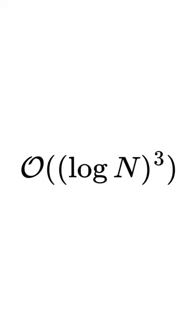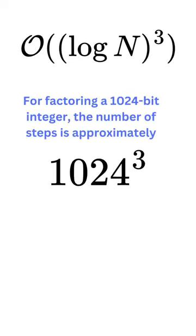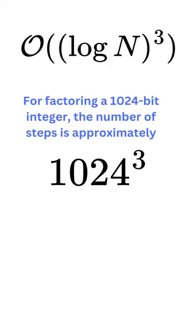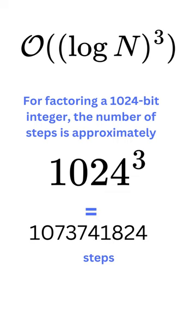The time complexity of the algorithm is O(log n)^3, which means that for factoring a 1024 bit integer, the number of steps is approximately 1024^3, which is approximately 1 billion steps.